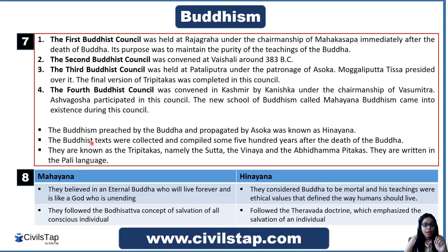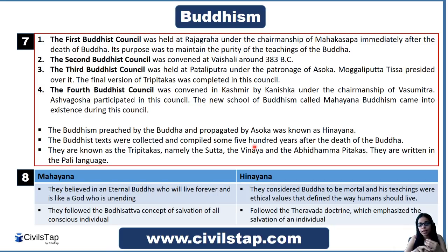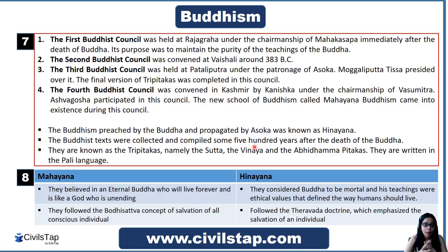Hinayana was the other school, propagated by Ashoka. The Buddhist texts — called the Three Pitakas — were collected and compiled some 500 years after the death of the Buddha. They are the Sutta Pitaka, Vinaya Pitaka, and Abhidhamma Pitaka, and they are written in the Pali language. You have to remember which language they were compiled in.